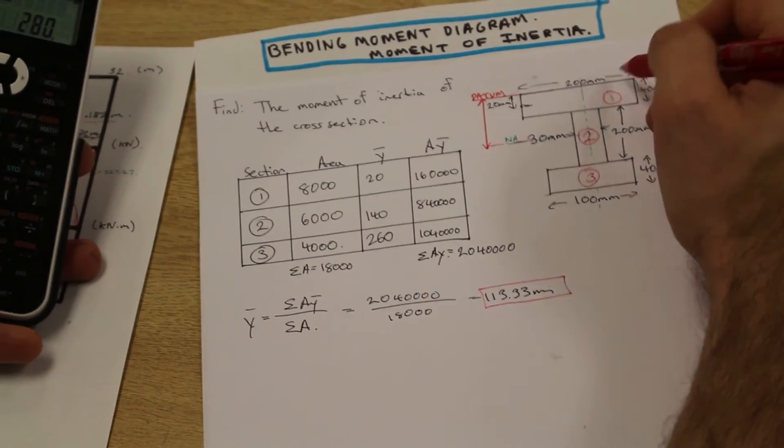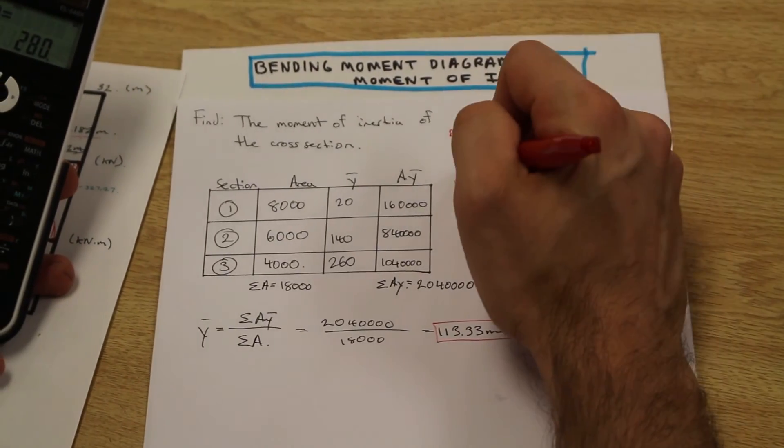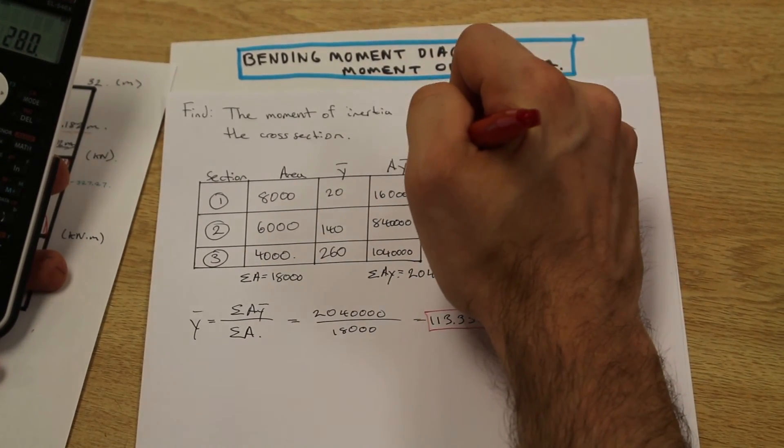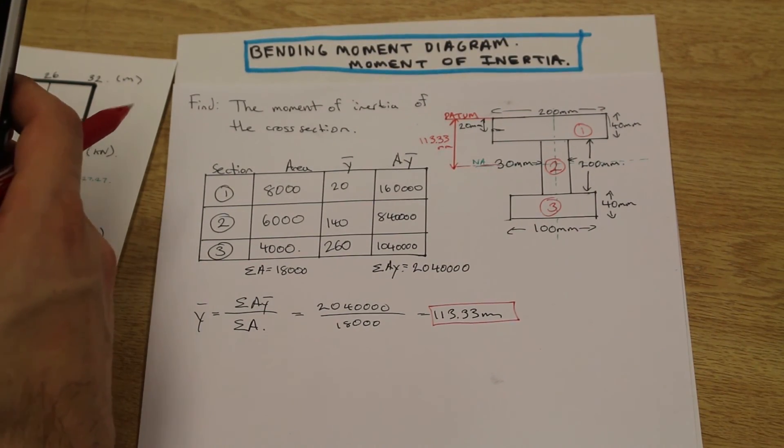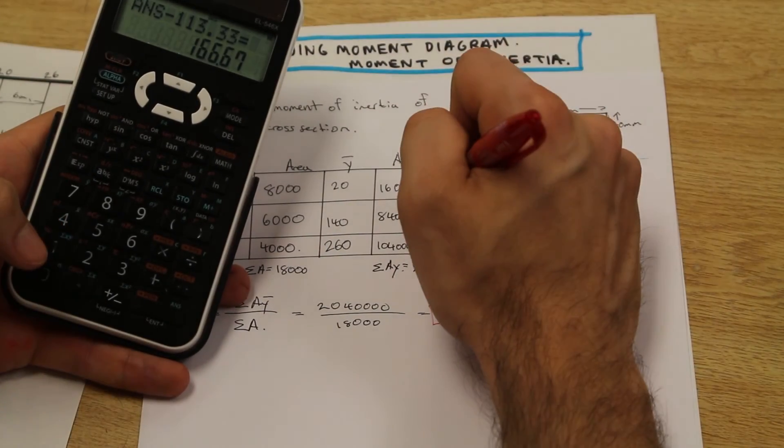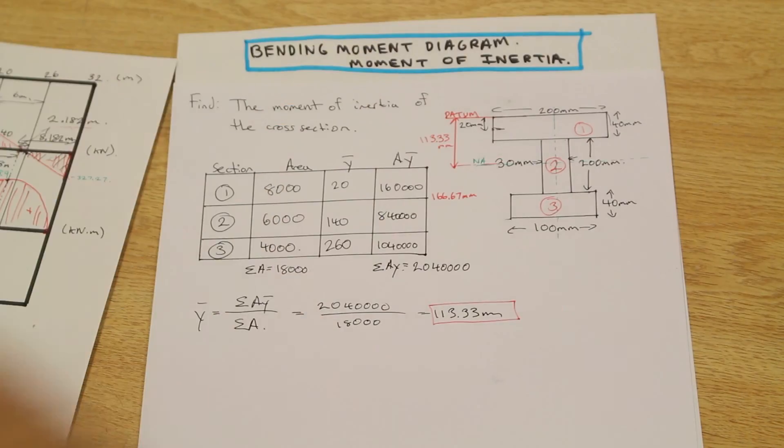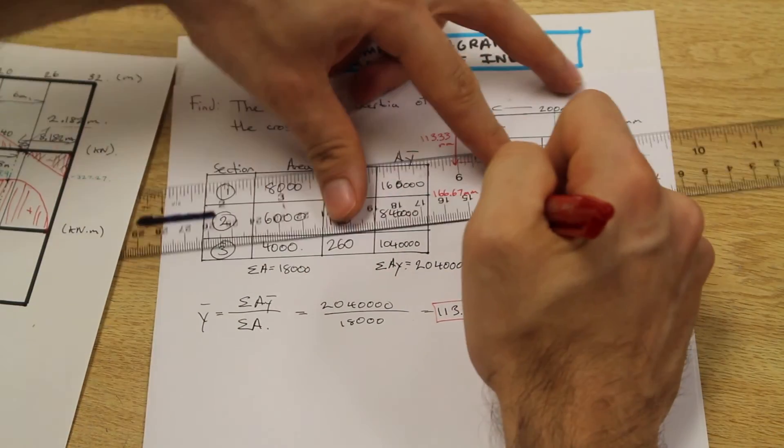The entire length of the I-beam minus the distance that we got here, which is 133.33 millimeters, is going to be 166.67 millimeters. That's the first step in solving the moment of inertia of the shape, and then afterwards solving the flexural stress.